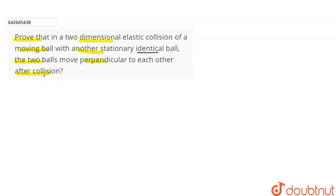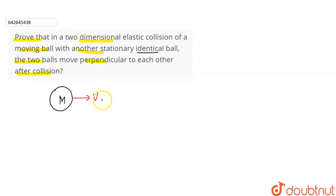If two-dimensional collision is happening, then this is what occurs. We assume we have a body with mass M, moving with velocity v in this direction. The direction along which the body is moving is called the line of motion.